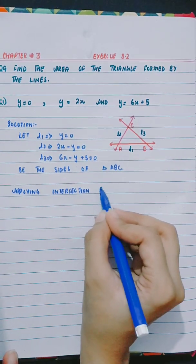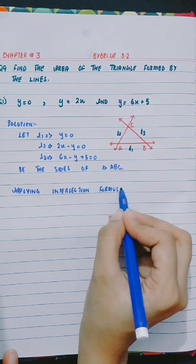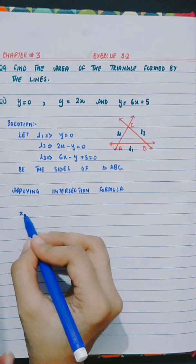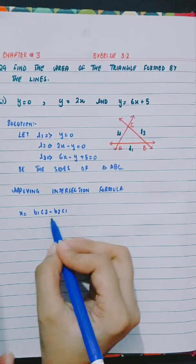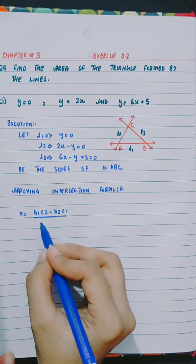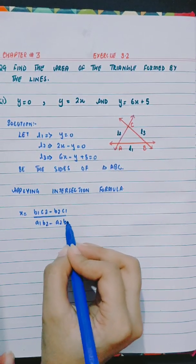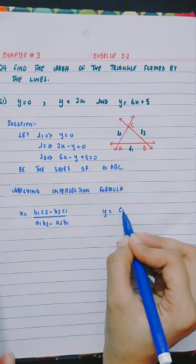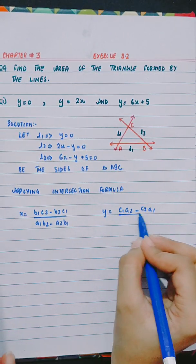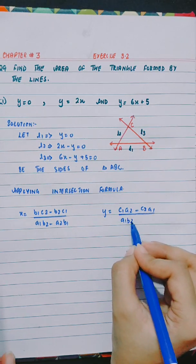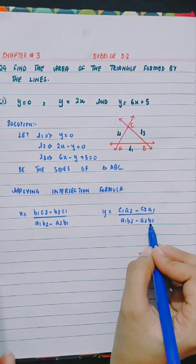Applying intersection formula: x equals b1c2 minus b2c1 divided by a1b2 minus a2b1, and y equals c1a2 minus c2a1 divided by a1b2 minus a2b1.